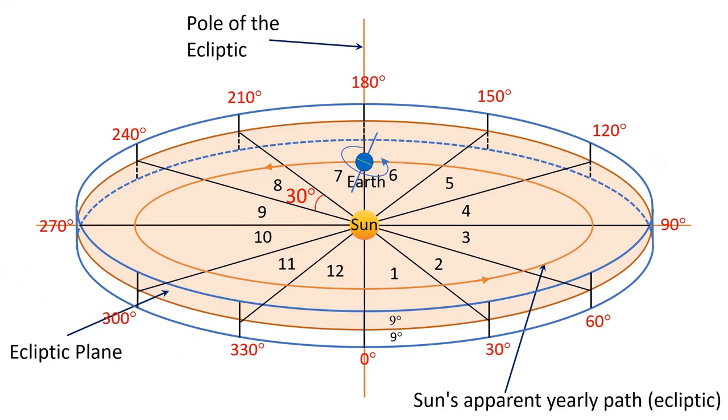Now you may ask why the zodiac is divided into 12 equal divisions rather than any other number. So let's try to understand.